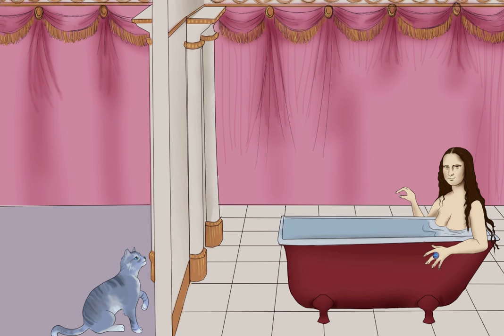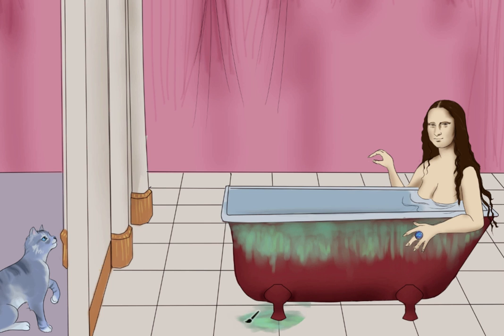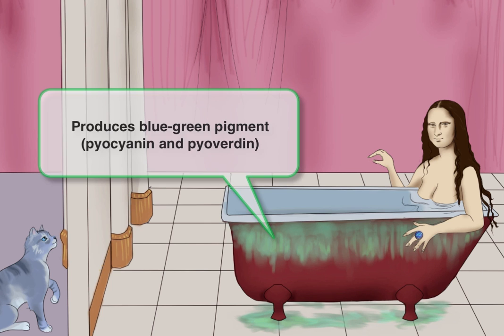The first unique characteristic of Pseudomonas is that it produces a blue-green pigment when plated. The color comes from pyocyanin and pyoverdin, substances that Pseudomonas produces. In fact, it's produced in such abundance that it may even turn wounds blue-green. We're going to draw this green residue or buildup on the tub and floor to help you remember this blue and green pigment from pyocyanin and pyoverdin.